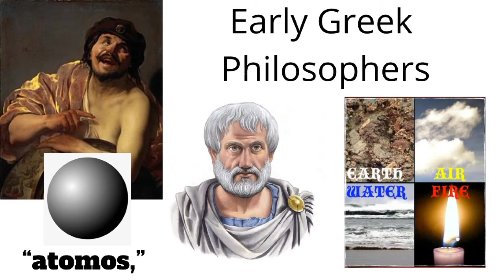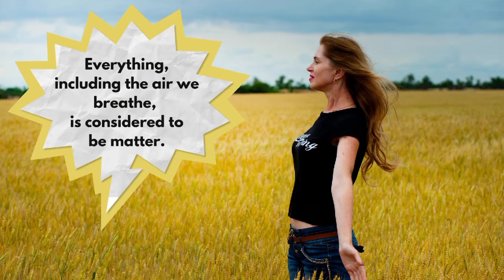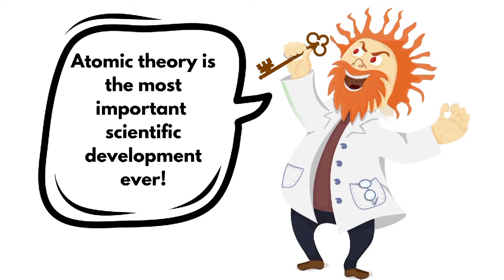Some early Greek philosophers have played pivotal roles concerning the atomic structure. Atomic theory is a scientific theory that states that all matter is made of tiny particles called atoms. Everything, including the air we breathe, is considered to be matter. That means atomic theory impacts just about everyone and everything on the Earth. Some scientists even claim atomic theory is the most important scientific development ever.